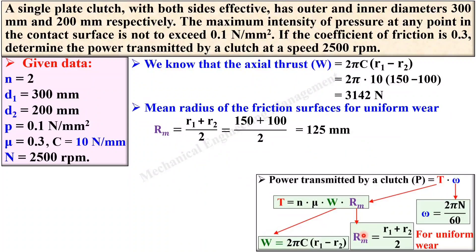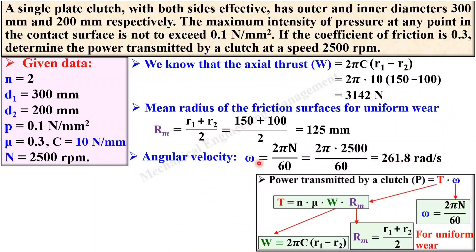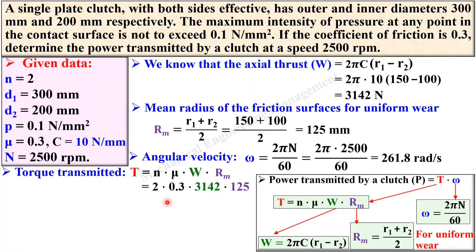Now we have W and rm. Find the angular velocity: put N = 2500 rpm into ω = 2πN/60 and simplify to get ω = 261.8 radian per second. Now find the torque transmitted: T = n × μ × W × rm. Putting n = 2, μ = 0.3, W = 3142, and rm = 125, simplify to get the torque in Newton·mm. Note: since rm is in mm, the torque unit is Newton·mm.